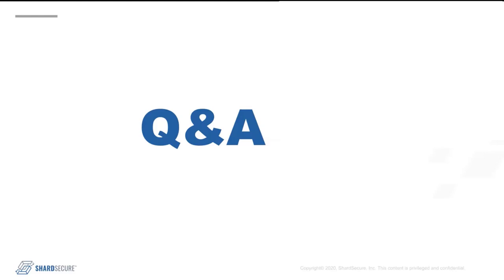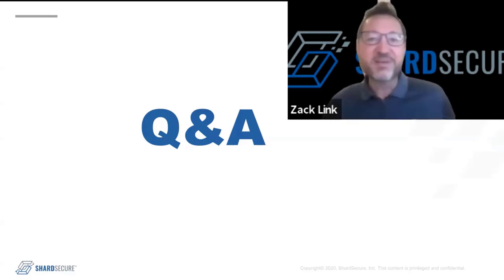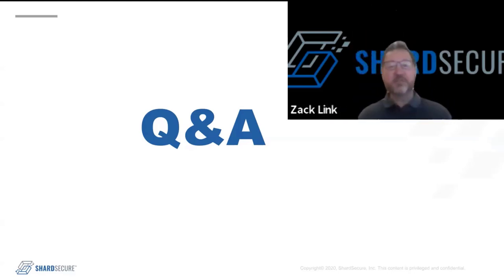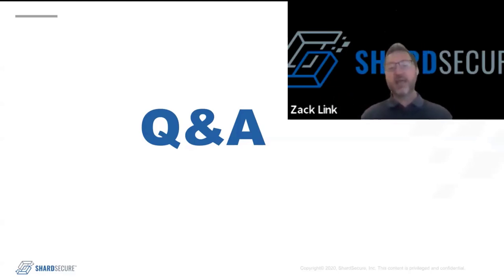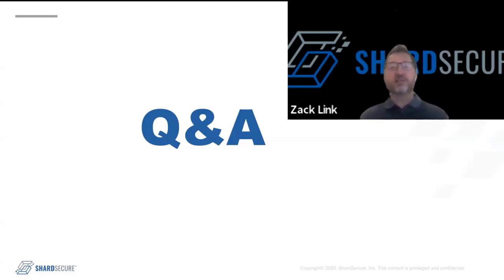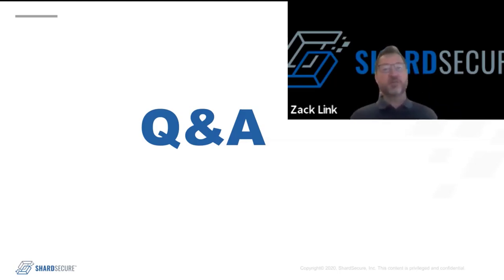Next question, probably a good one for Zach: with the micro shard engine being the central point of control, doesn't that become the weak point in the system? How is the central engine secured? I wouldn't call it the weak point of the system, but we do spend a lot of time securing those nodes — they're definitely hardened. It's still part of the attack surface though: while we say we reduce your attack surface by removing all your back-end storage where the data resides at rest, the cluster remains as part of that attack surface. We spend a lot of time hardening it to ensure it's as resistant as possible to any types of attacks.